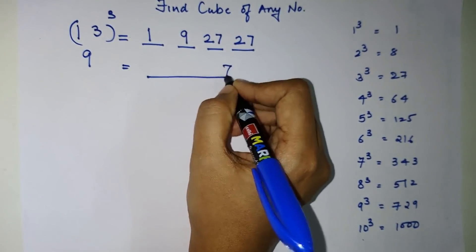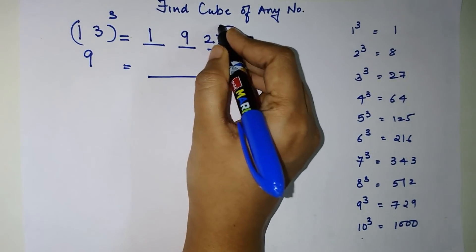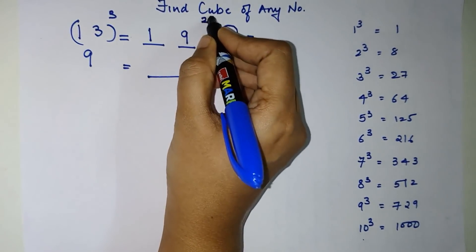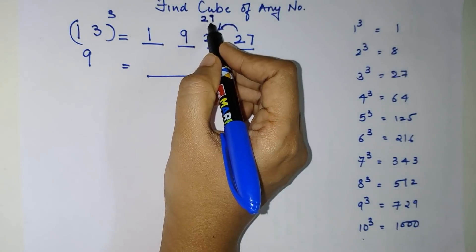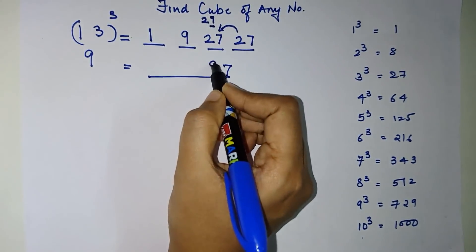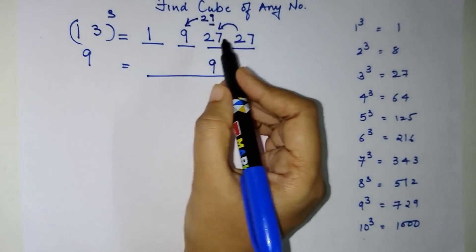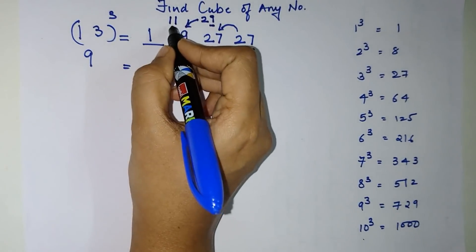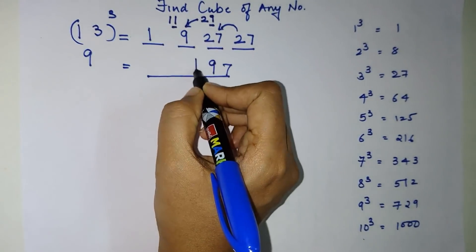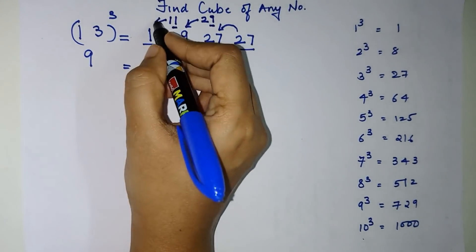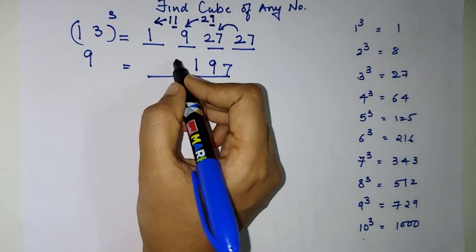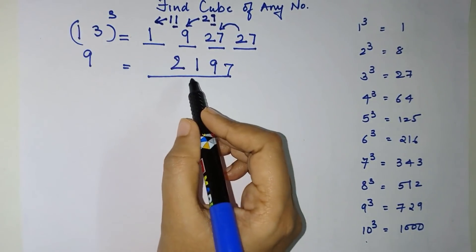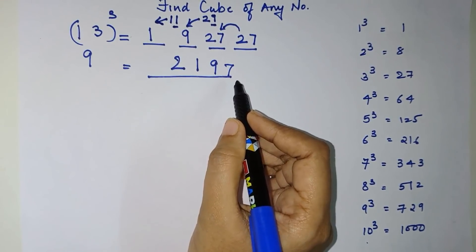To write the final answer, we concentrate on the units place. We write 7, and the 2 left over gets added to 27, giving 29. The units digit is 9, and the 2 left over gets added to 9 giving 11. The units digit is 1, and the 1 left over gets added to 1 giving 2. So 13³ = 2197.